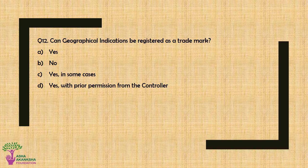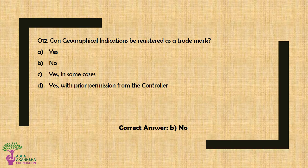Question No. 12: Can geographical indications be registered as a trademark? Option A: Yes, Option B: No, Option C: Yes in some cases, or Option D: Yes with prior permission from the controller. The correct answer is Option B — No. A geographical indication cannot be registered as a trademark.